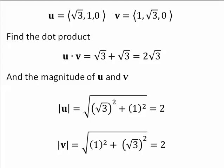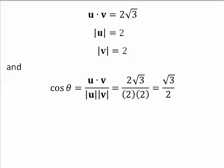Find the angle between these two vectors. U dot v is equal to 2 radical 3. The magnitude of u is equal to 2, and the magnitude of v is equal to 2. So it must be true that the cosine of theta is equal to radical 3 over 2. There is only one angle between 0 and pi whose cosine equals radical 3 over 2, and that angle is pi over 6.